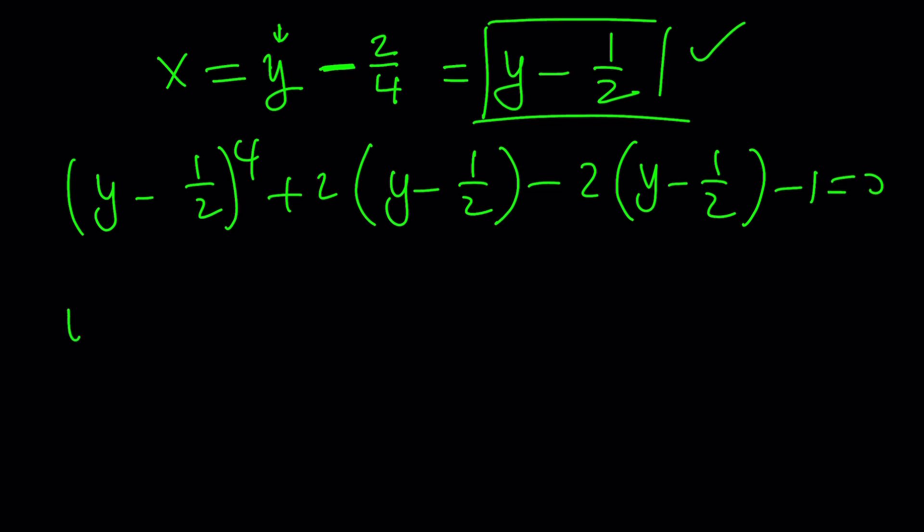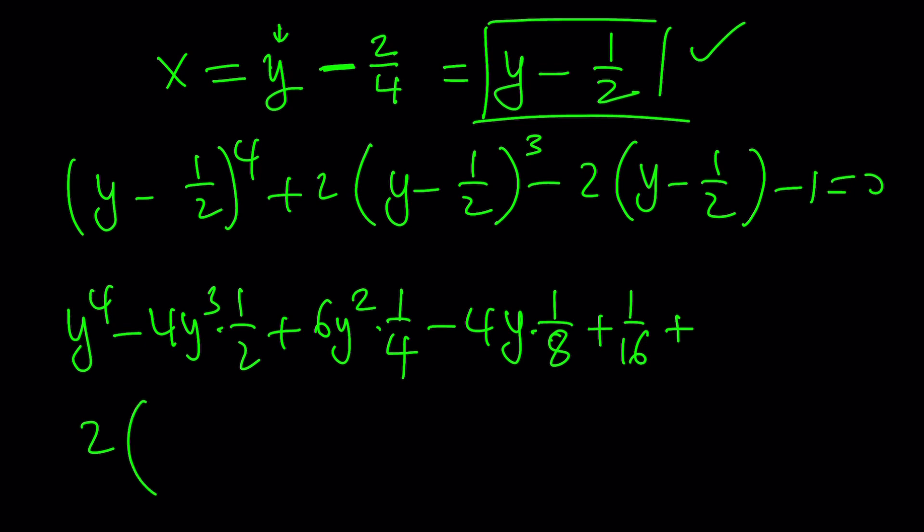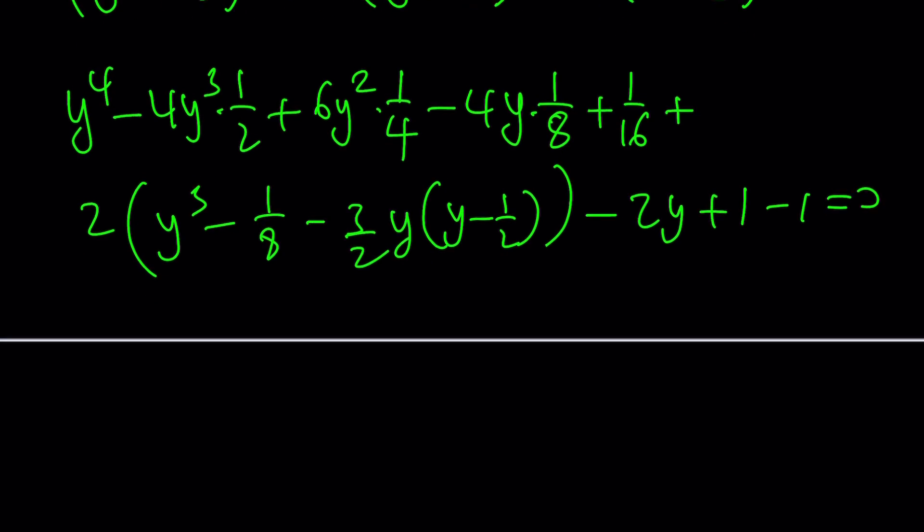So if you expand this, remember the formula. We get y to the fourth power minus 4 times y cubed multiplied by 1 half plus 6 y squared multiplied by 1 half squared, minus 4y multiplied by 1 half cubed, which is 1 eighth. And then finally, plus 1 over 16, which is 1 half to the fourth power. And then the rest is fairly easy. By the way, this should be a cube. So we've got to continue with 2 times. Minus 3 halves y multiplied by y minus 1 half. And then this will just be 2y plus 1 minus 1 equals 0.